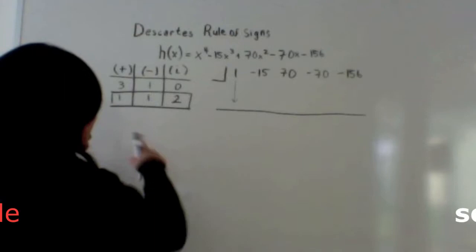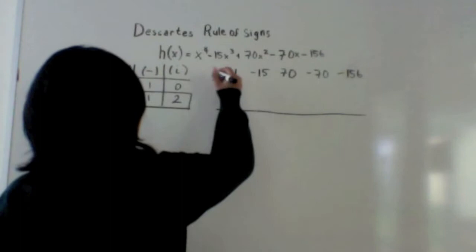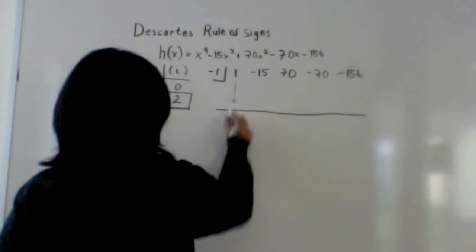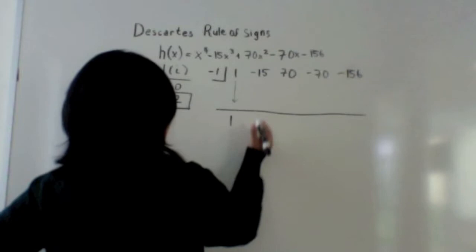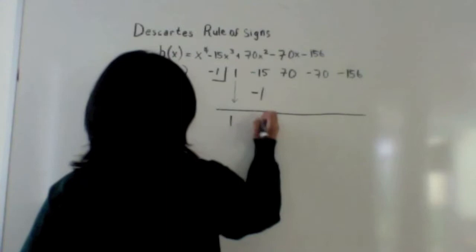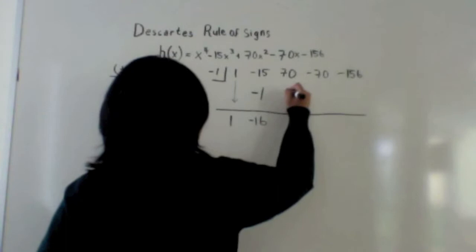For this, you basically just plug in any numbers and hope you get a remainder of zero. So you're going to use synthetic division with negative 1. You bring down the 1 and multiply it by what's in the box, so you get negative 1.